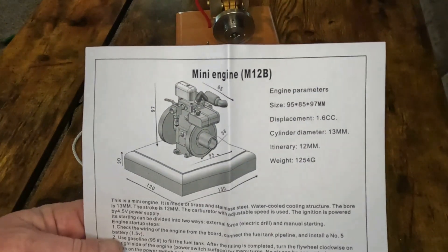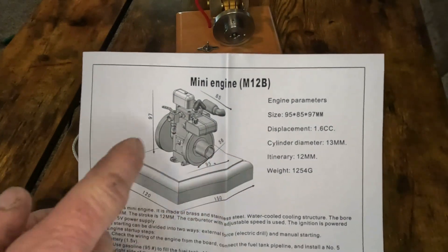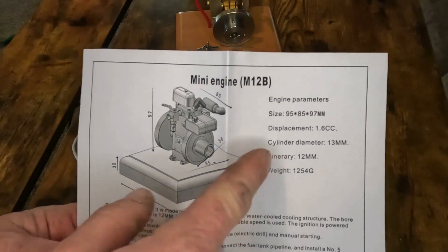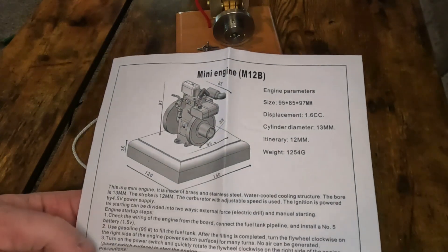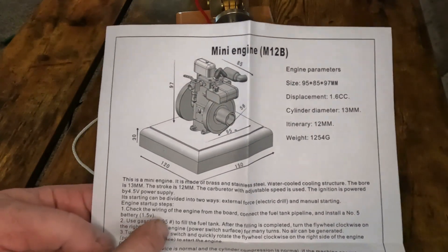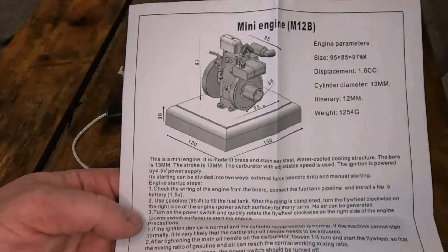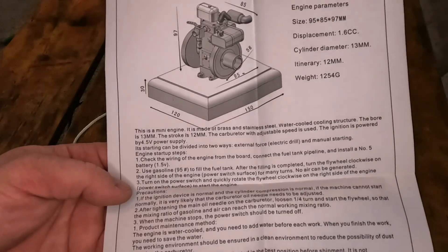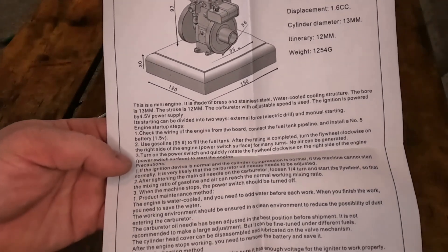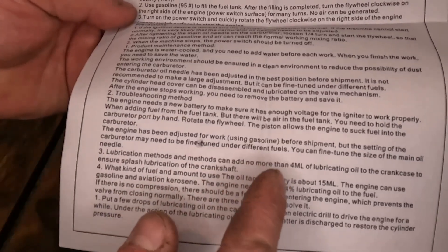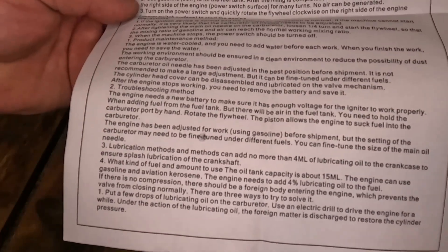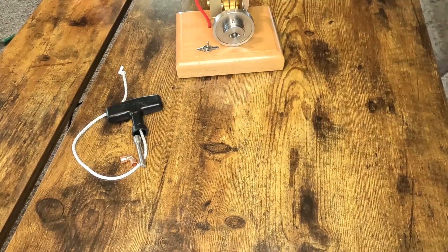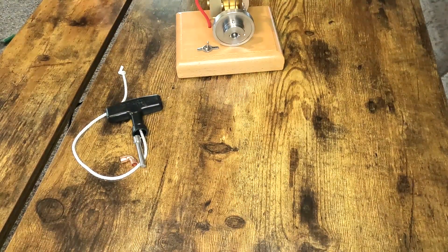So it's 1.6 cc's, a 13 millimeter diameter piston. I imagine a 12 millimeter stroke. It says to use, I'm assuming, 95 octane. Add no more than four milliliters of lubricating oil to the crankcase. So we'll put four milliliters of straight 30 weight down into the crankcase.